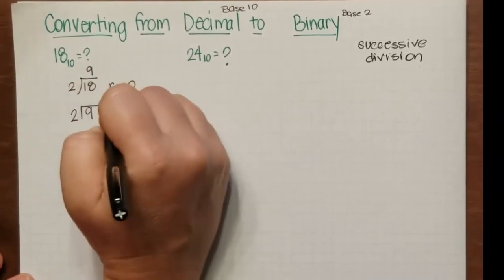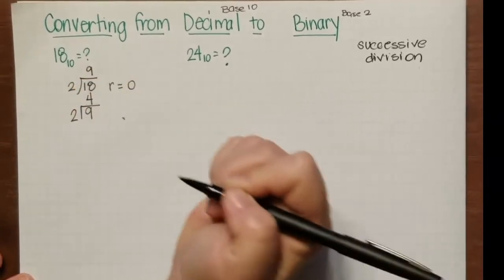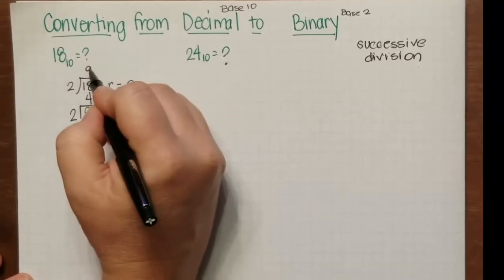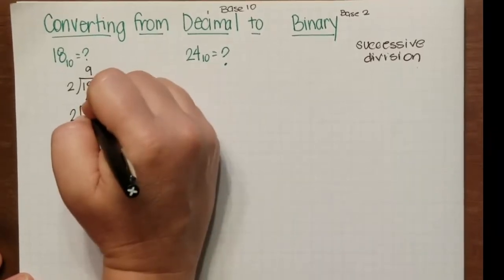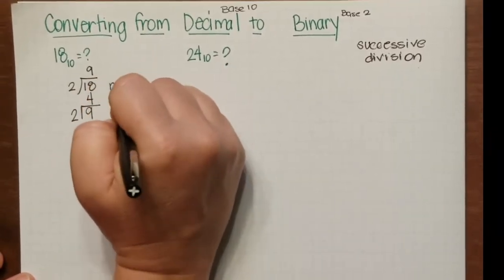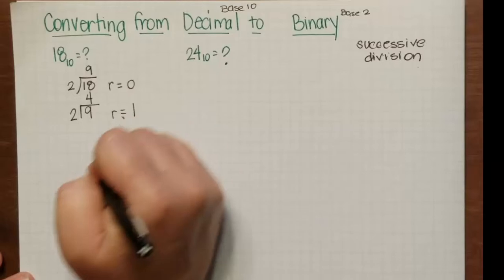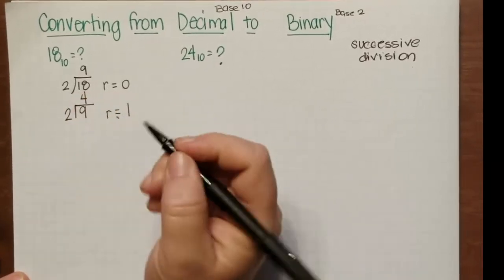Now we take the 9 and divide 2 into it. It goes 4 times. See, I took the 9 down from here and put it inside. So it goes in 4 times and it has a remainder of 1.